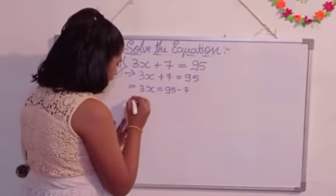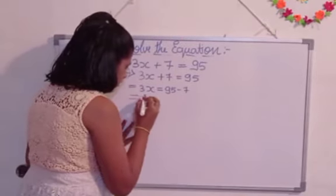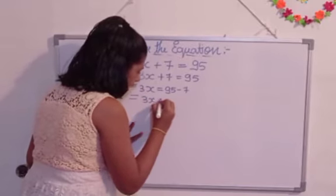In the next step let's write what is equal to? 3x is equal to 3x.